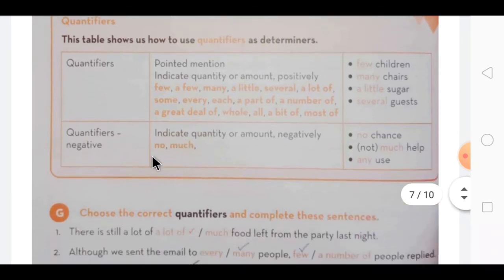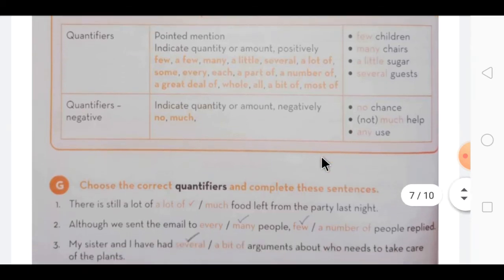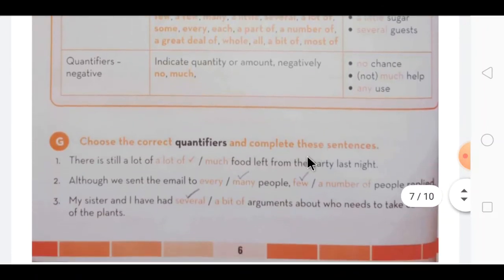Now which are negative quantifiers? In which it is showing negativity. No or much, not much, such can be used, or any. These three highlighted words - no, not much or any - these are negative quantifiers. So it depends on the sentence, which word you have to use in it.